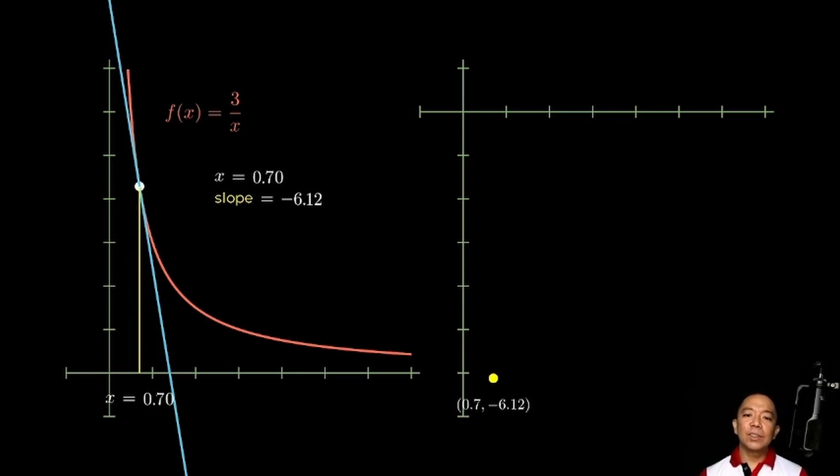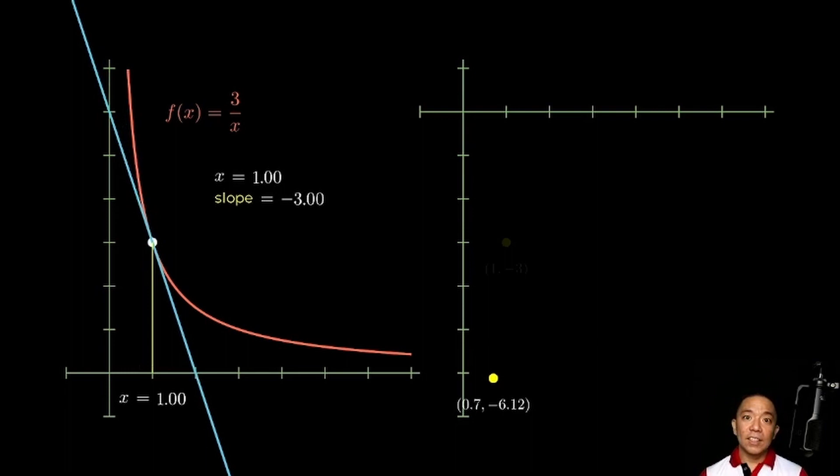Then, move natin yung x values natin. Ilagay natin siya ngayon sa x equals 1. When x equals 1, the slope is computed to be equal to negative 3. So, i-plot natin yung 1 negative 3 sa right side. Again, sa right side, we're plotting yung slope nung tangent line at a particular x-coordinate ni f of x.